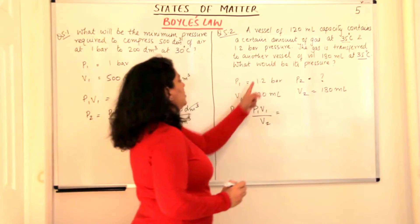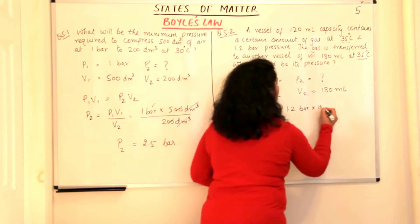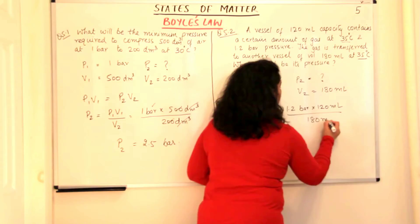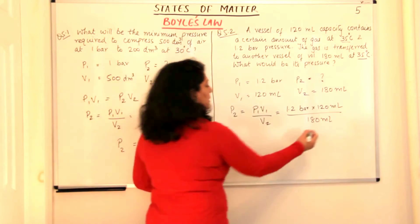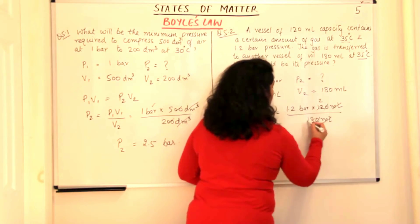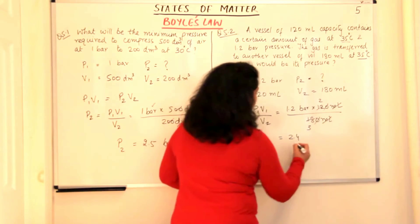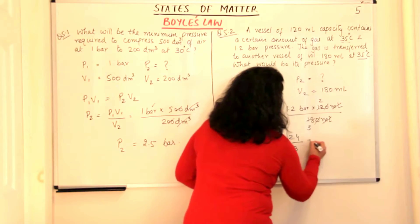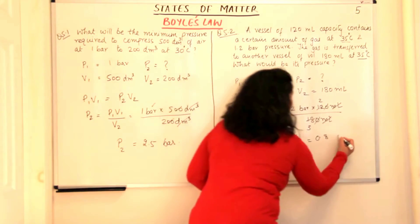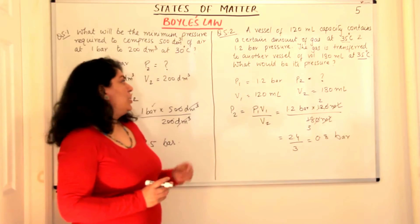So P2 = 1.2 bar × 120 ml / 180 ml. The ml units cancel. Simplifying: 120/180 reduces to 2/3, so 1.2 × 2 = 2.4, divided by 3 = 0.8. The pressure would be 0.8 bar. So this was question 2.